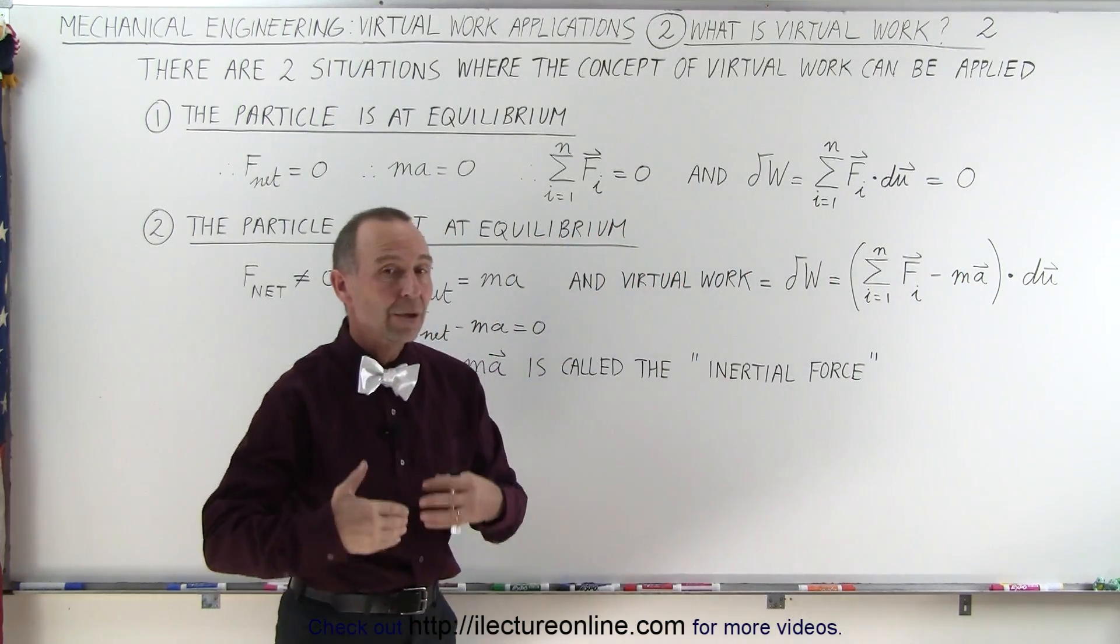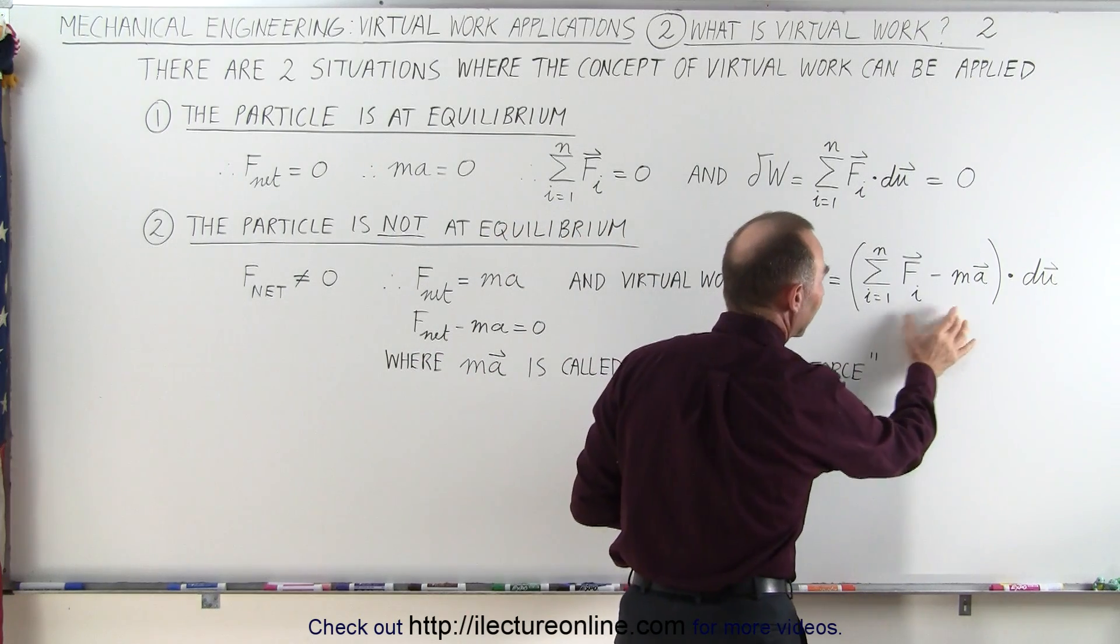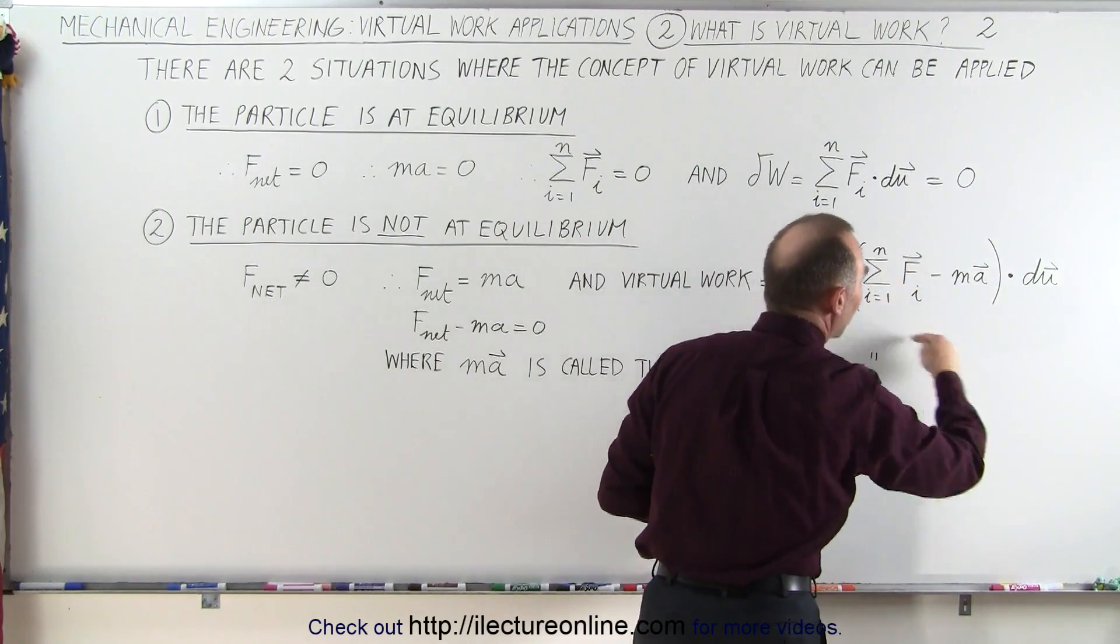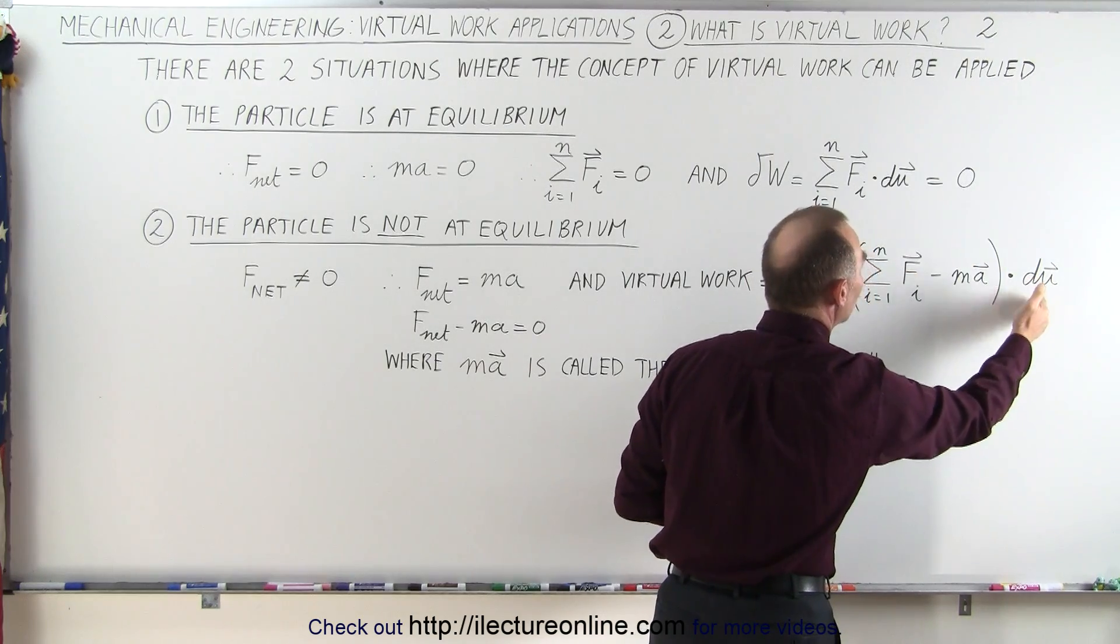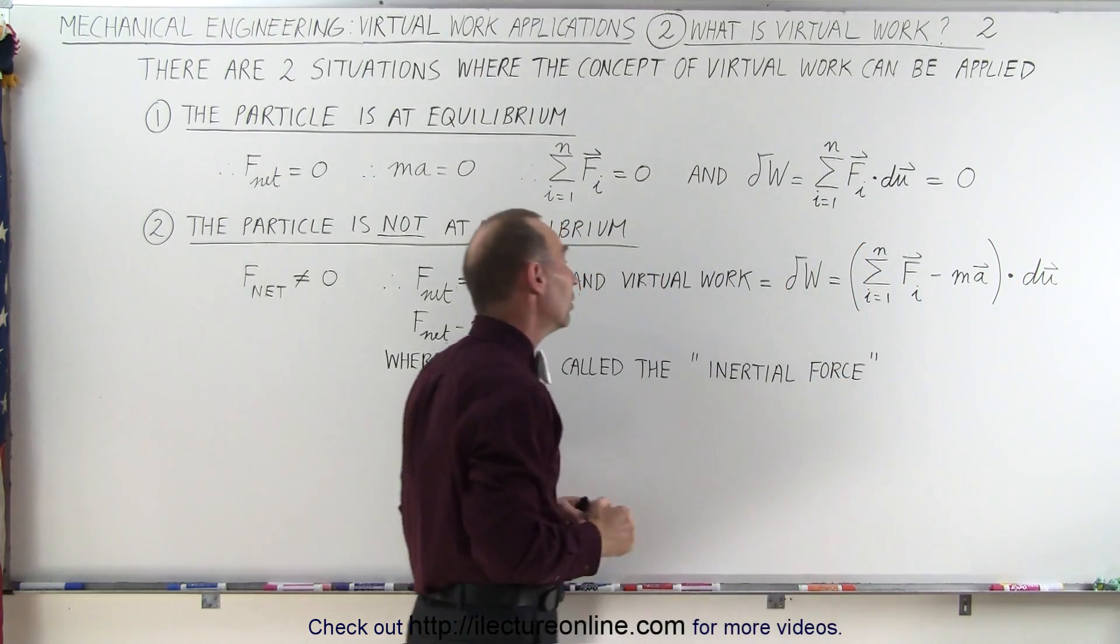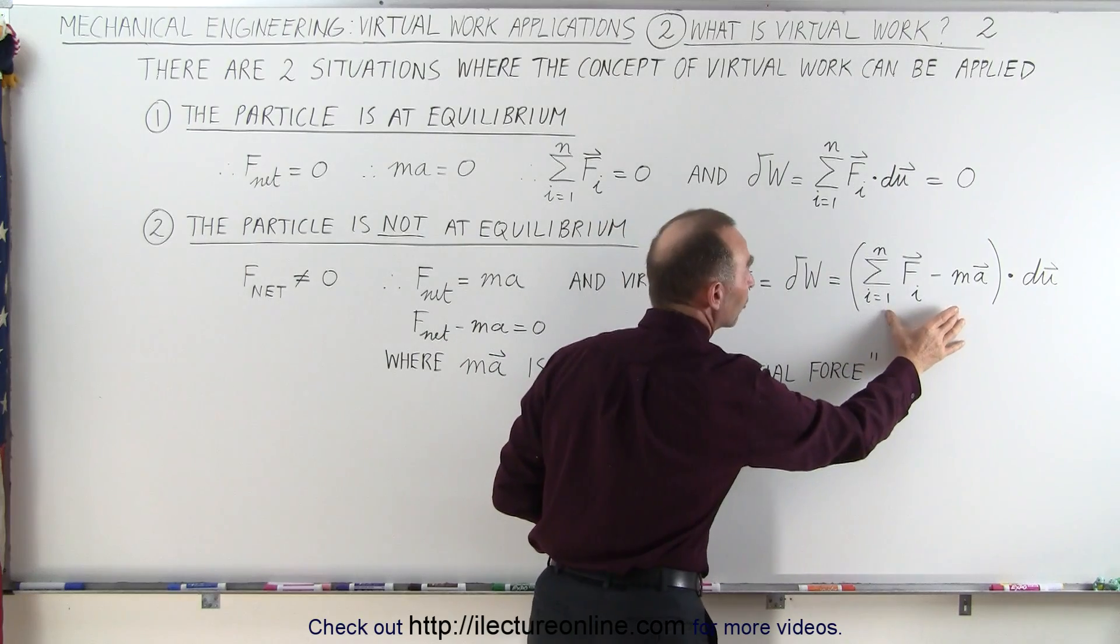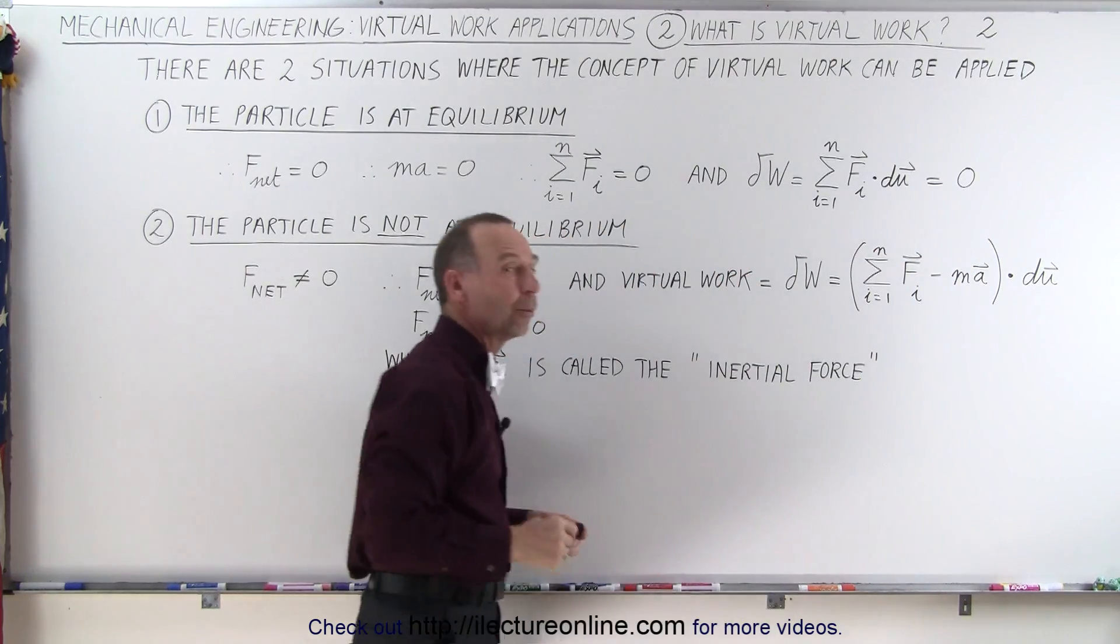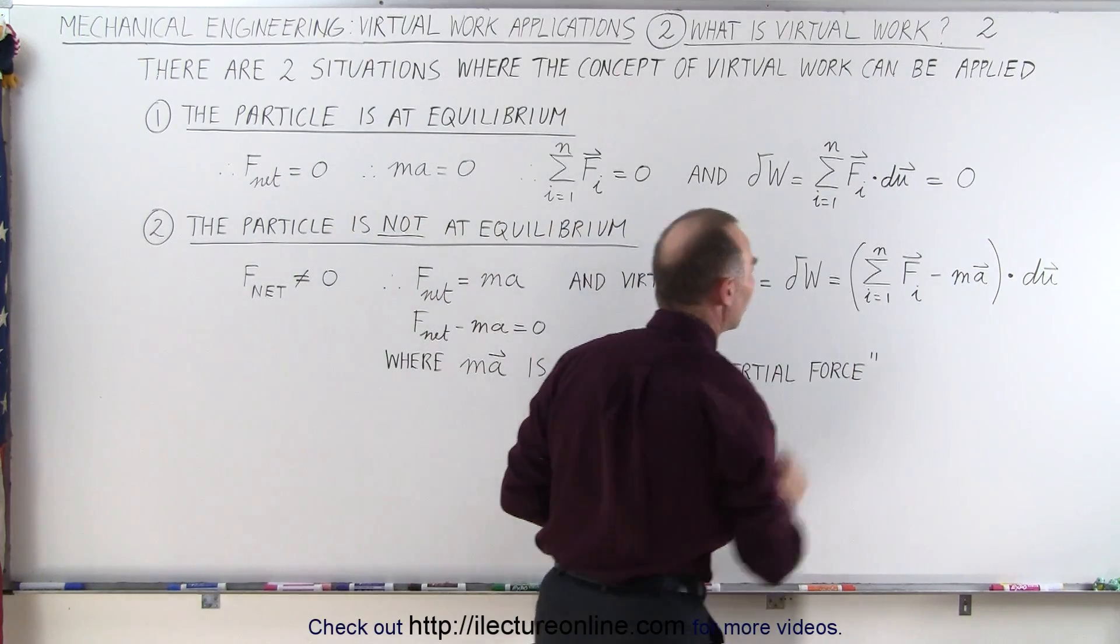And then if we take that and multiply that via the dot product times a small imaginary displacement, this then represents virtual work, and this should then also equal zero because this term will equal zero. In other words, it acts like it's a net force equal to zero. When we subtract from that, that ma term,